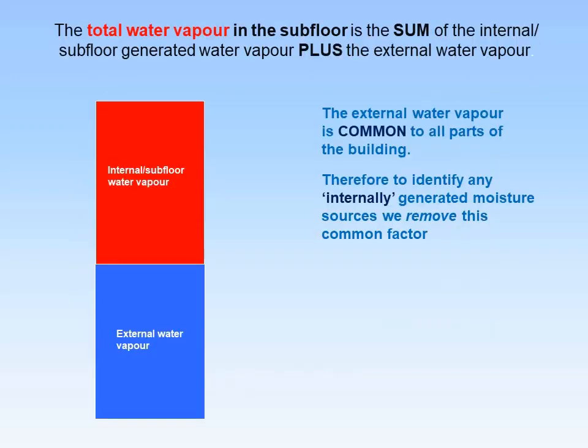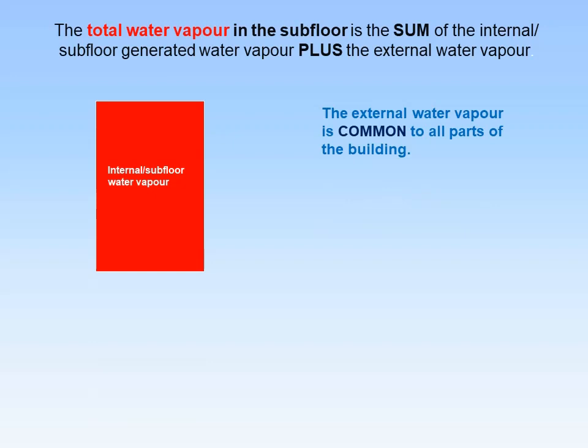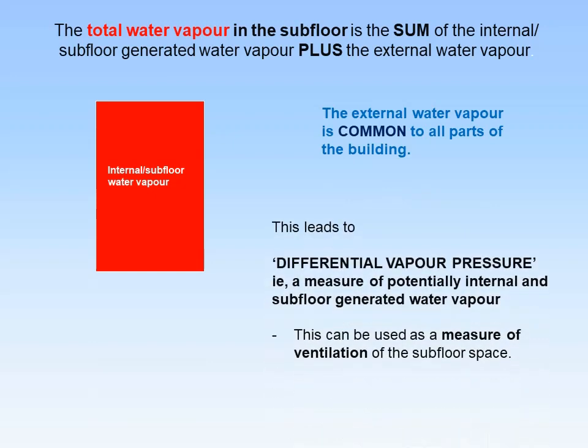The total water vapour in the subfloor void is the sum of two components: the internal levels of moisture plus the subfloor-generated water vapour, plus the external water vapour, as shown in the diagram. Since external water vapour is common to all parts of the building, we remove this common factor from our calculations. This gives us the differential or excess vapour pressure — a measure of potentially internal and subfloor-generated water vapour only, usable as a measure of subfloor space ventilation.